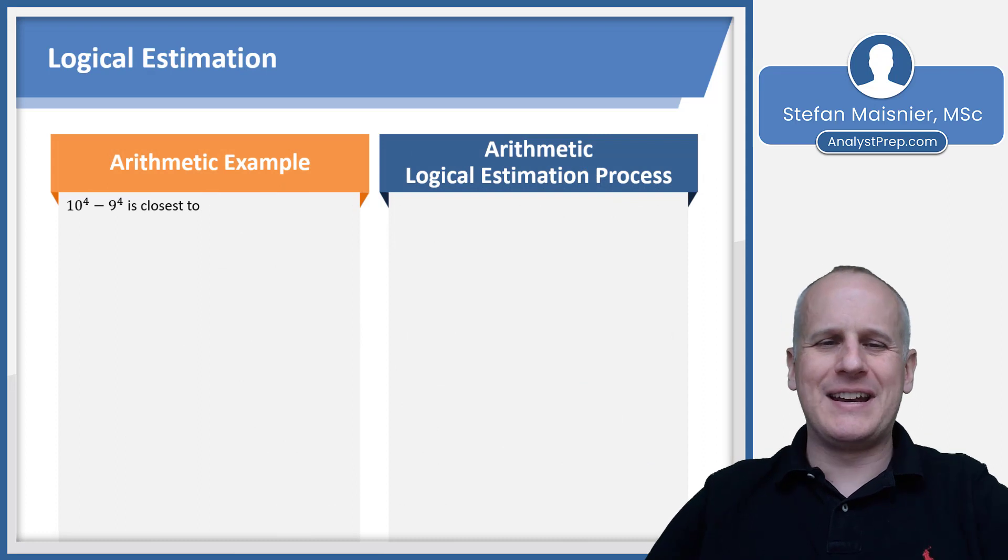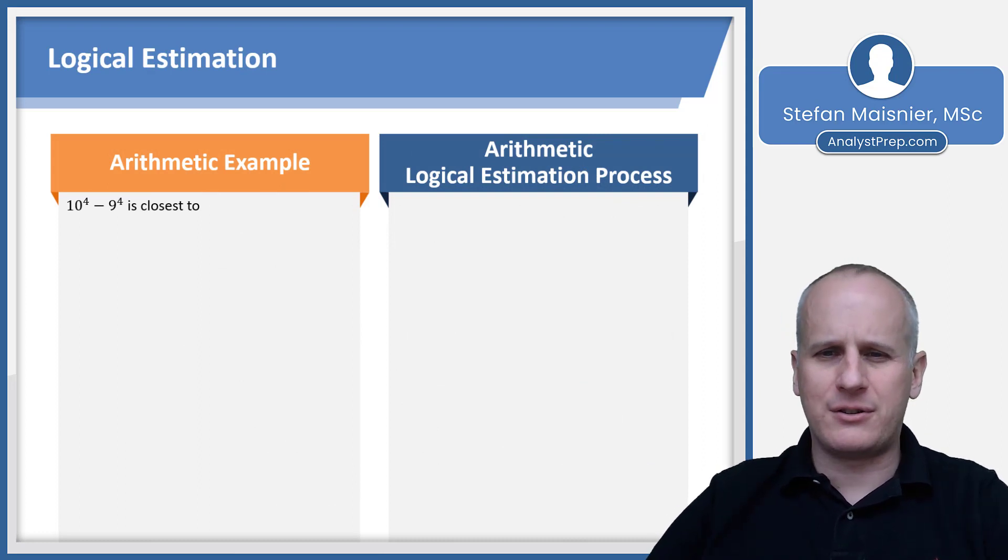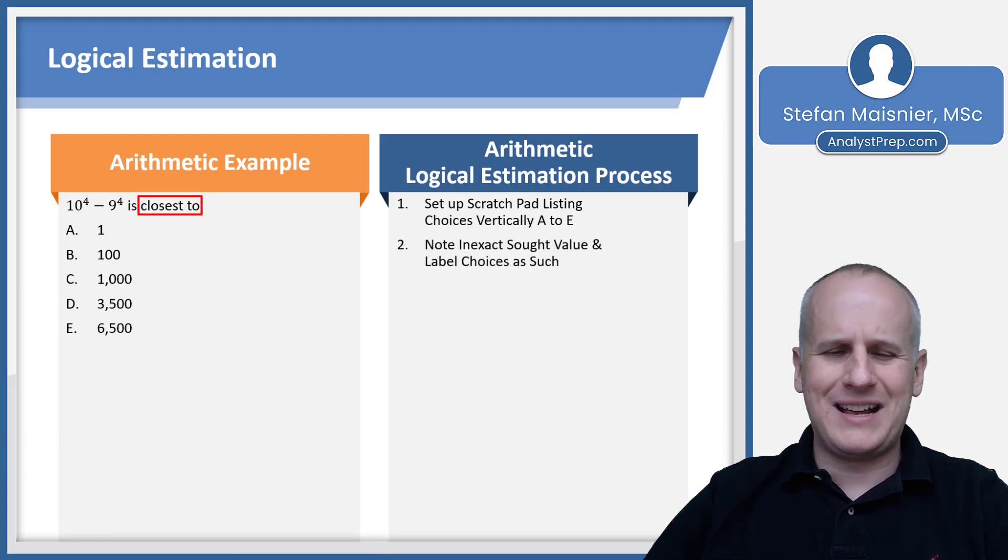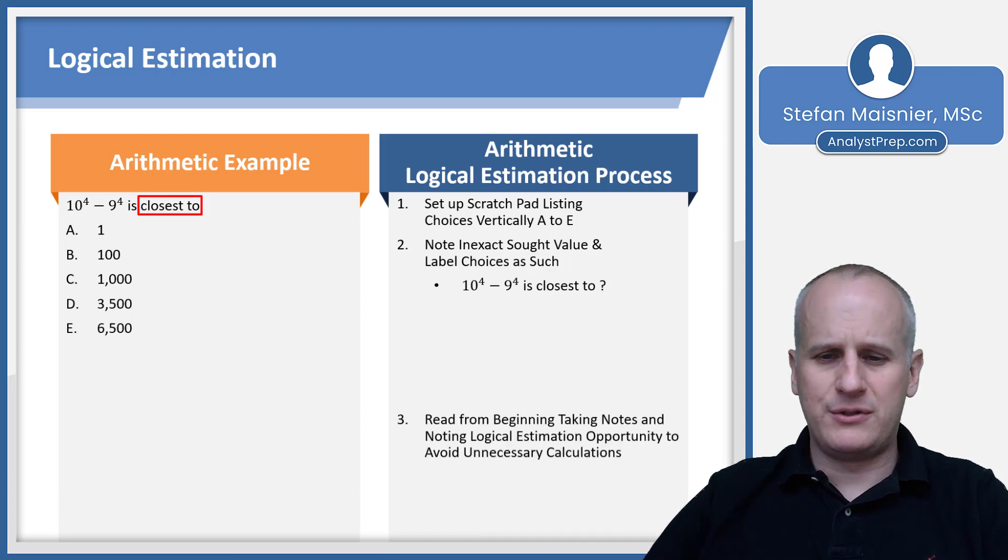So let's take a look at an arithmetic logical estimation example. Step one: as always, set up the scratch pad listing your choices vertically A through E. And we can see that we've got this phrase closest to. So because it's closest to, that's a big neon sign that says don't figure out necessarily exactly what 10 to the fourth minus 9 to the fourth is. Be able to estimate.